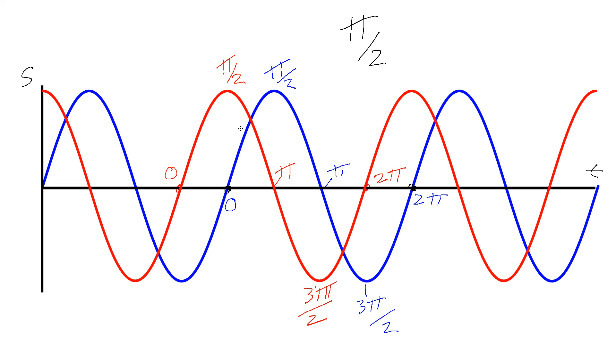So at any point the red wave is to the left of the blue wave by π/2. So if these waves were travelling to the left then the red wave would be said to be leading the blue wave by π/2. If these waves were travelling to the right then the red wave would be said to be trailing the blue wave by π/2 radians of phase.